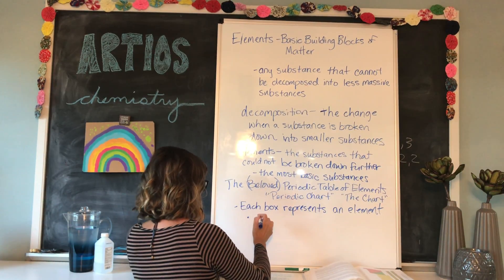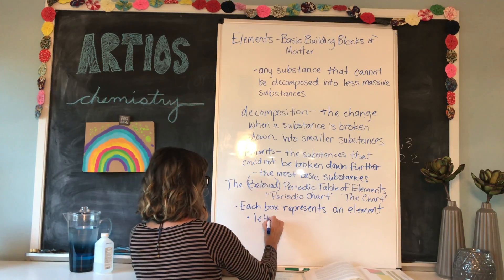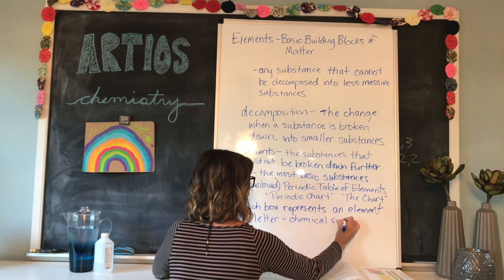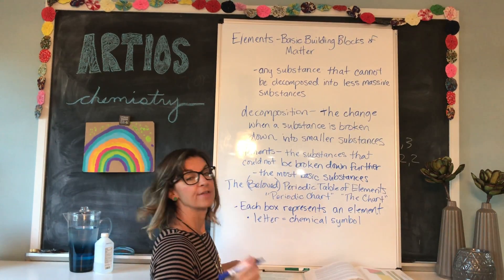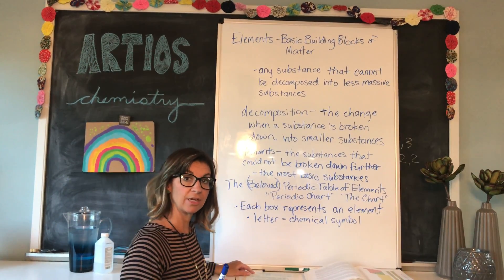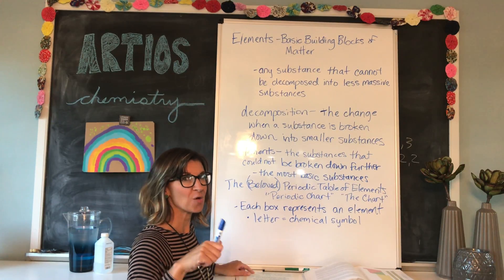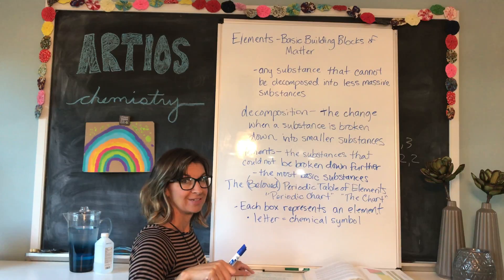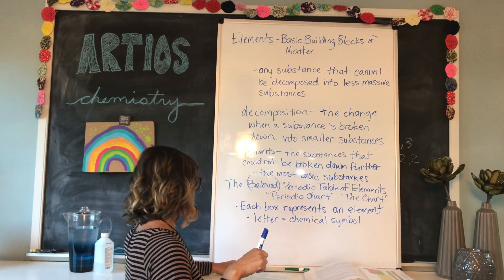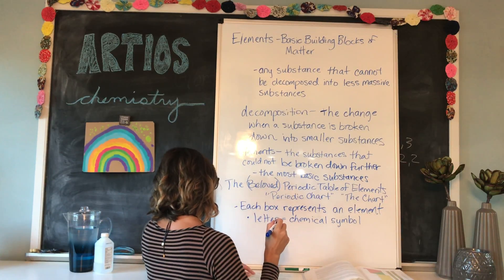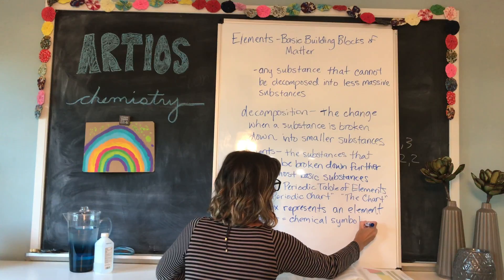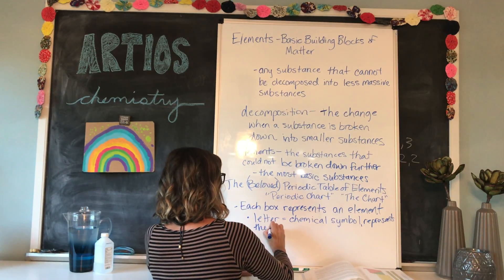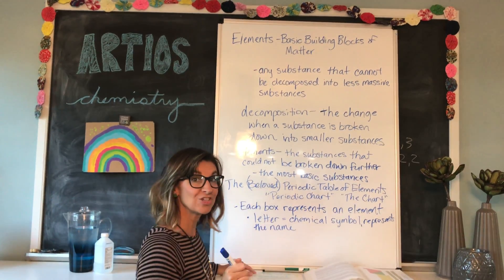There is a letter in each box — the letter is called the chemical symbol. It is an abbreviation of the name of the element. The name of the element could be an English name or it could be a Latin name, so it's not always obvious which letter — or in some cases two or three letters — go with which element. Unfortunately you do have to memorize a few of them.